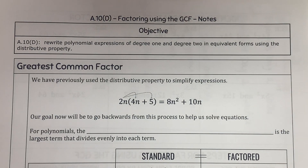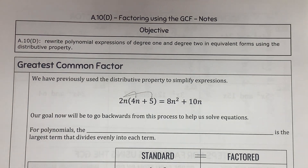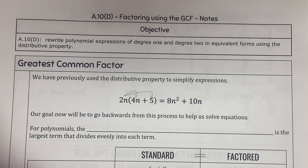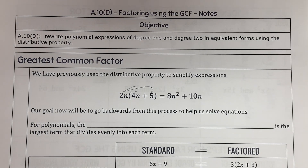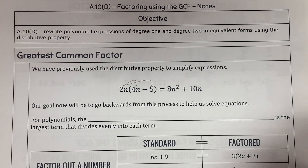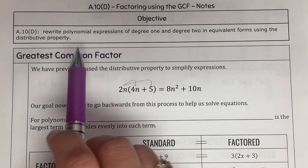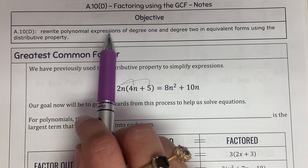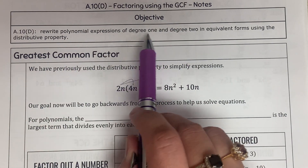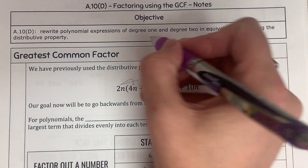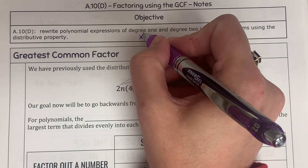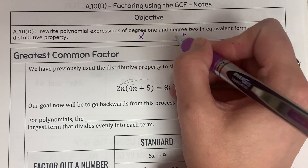Today we are working on factoring using GCF. GCF stands for Greatest Common Factor. You probably remember Greatest Common Factor when you worked on fractions when you were little. What we are mainly doing is rewriting a polynomial expression of degree 1 or 2 — so x squared or just x. x with the 1 is degree 1 and x squared means degree 2.